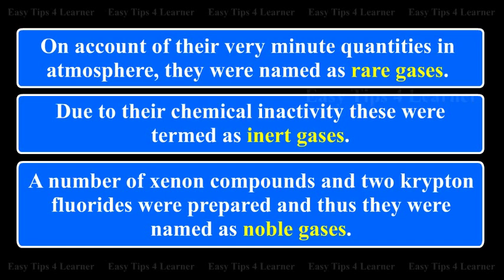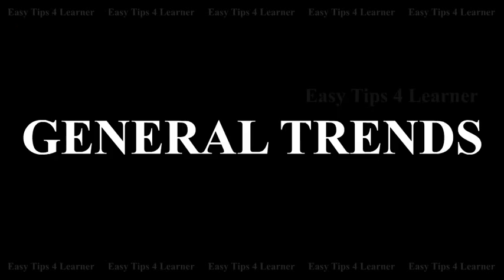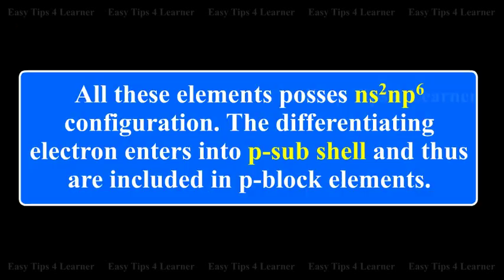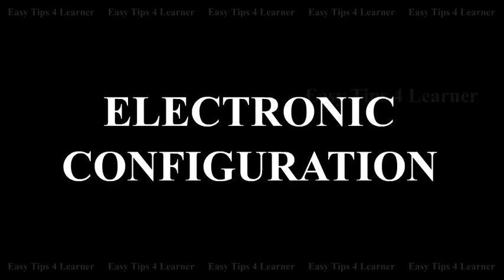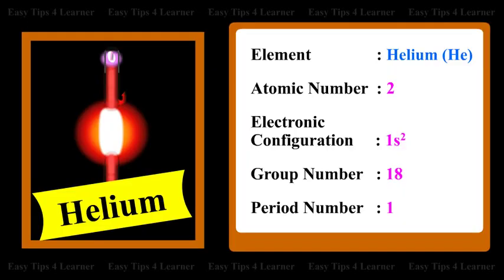General trends: All these elements possess ns² np⁶ configuration. The differentiating electron enters into a p sub-shell, and thus they are included in p-block elements.